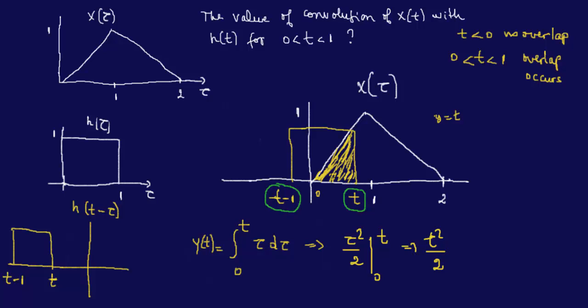That's how you find that answer. You could have different versions of this question where they give a graphical representation of the final convolution, but we stop here because this was the question. Once you get a feel for finding the overlapping areas, it's pretty straightforward after that. If you have any questions, let me know. Thanks.